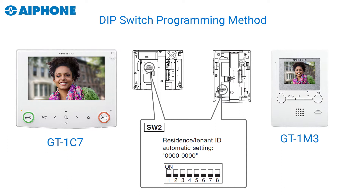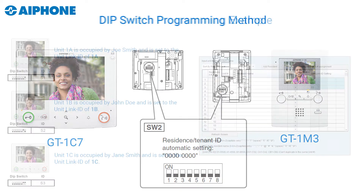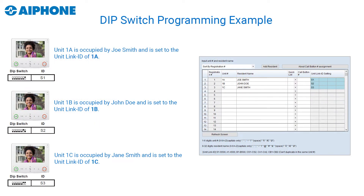With the dip switch method, each individual apartment gets its own unique ID set by switching the dip switches on the back of the units. Each dip switch setting has an associated software ID which must be added with our software tool to the system. These software IDs get placed in the unit link ID settings in the software tool. Please take a moment to read the examples provided to get a better grasp of the concept.